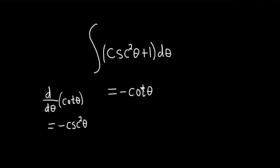Let's pause here and just check this mentally. When you differentiate this you should get back the original. The derivative of cotangent is negative cosecant squared theta, but we already have a negative here, so two negatives will turn it into a positive.